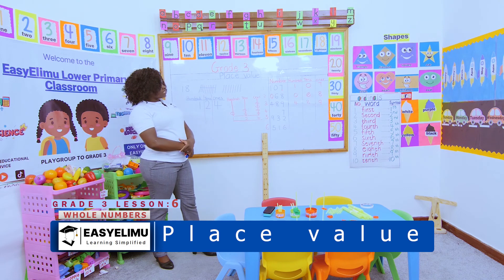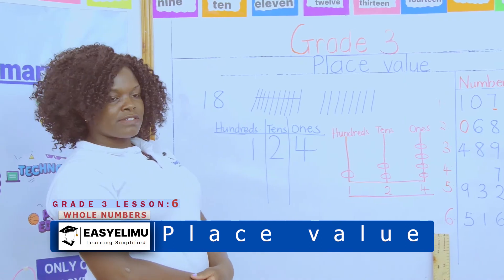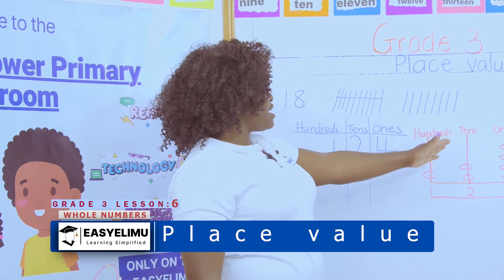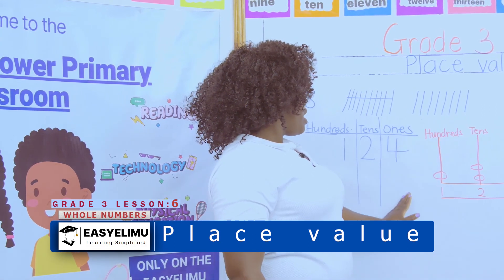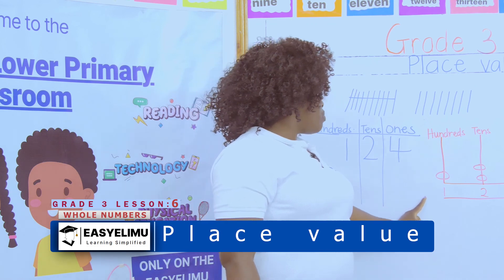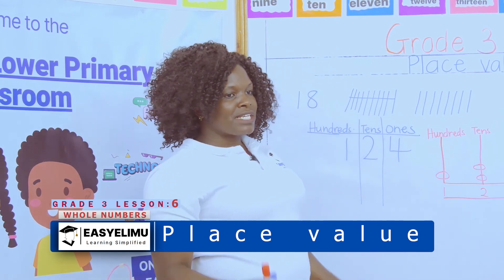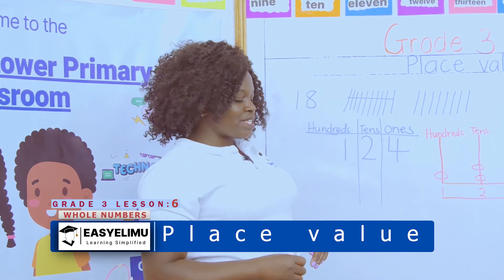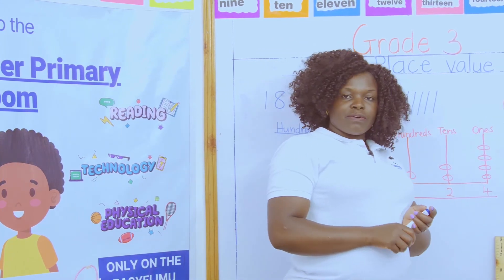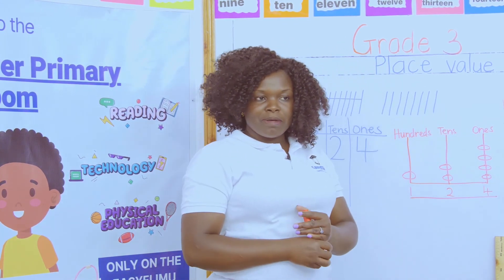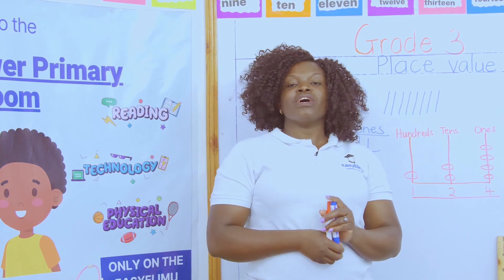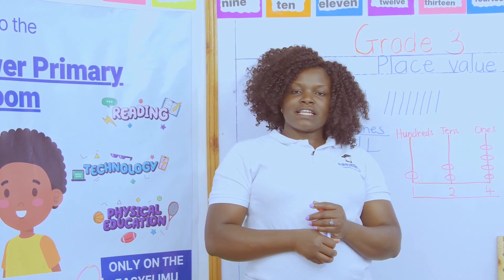Any question, any problem with place value? In grade four you will increase the numbers — these will now be four digits, and when you move from hundreds there is a number called one thousand, which has three zeros. Okay, up to there — any question? Thank you very much and I hope to see you in the next lesson.